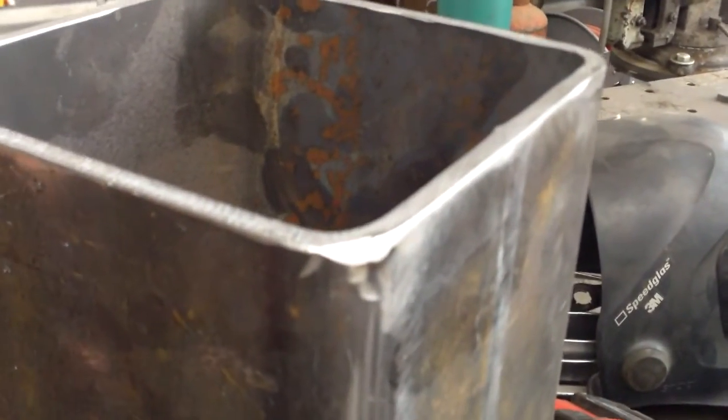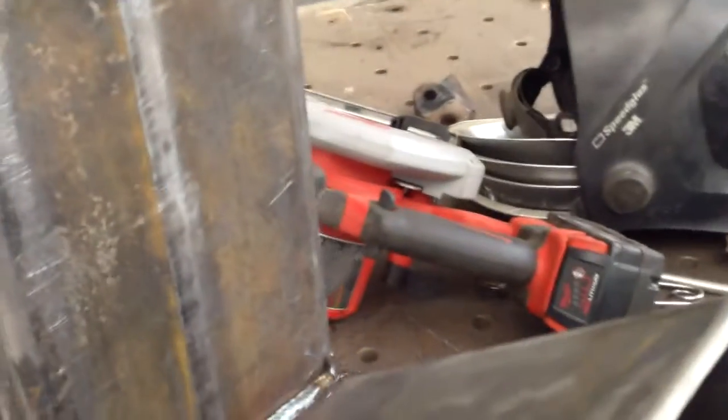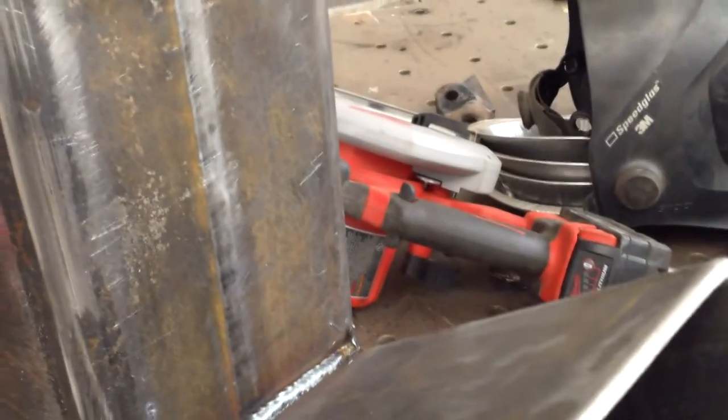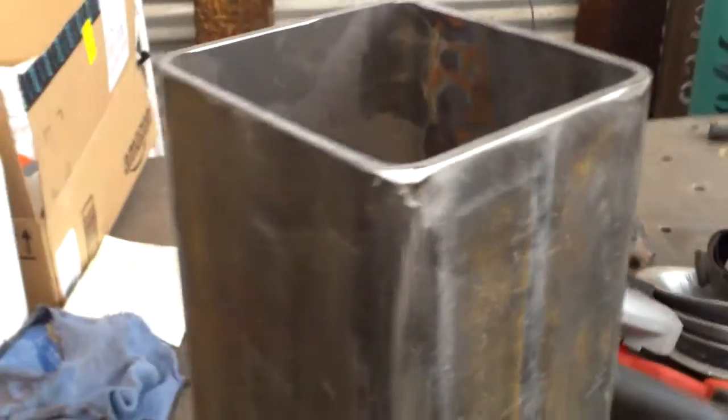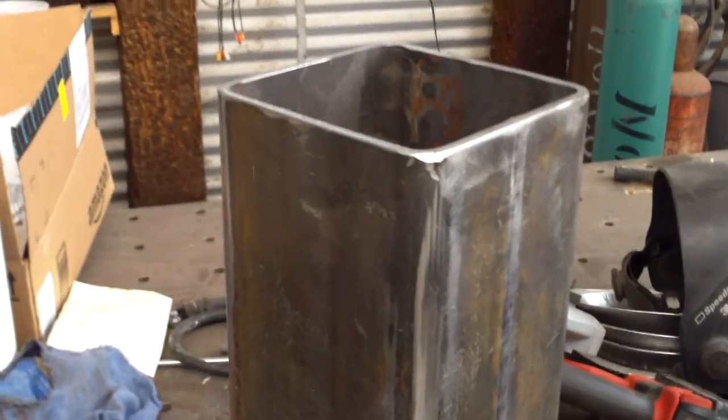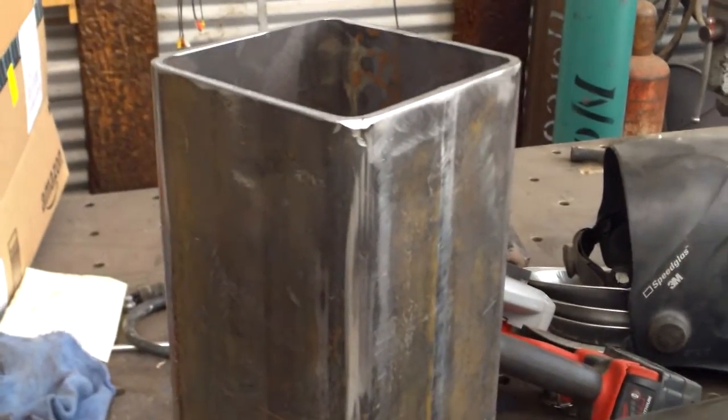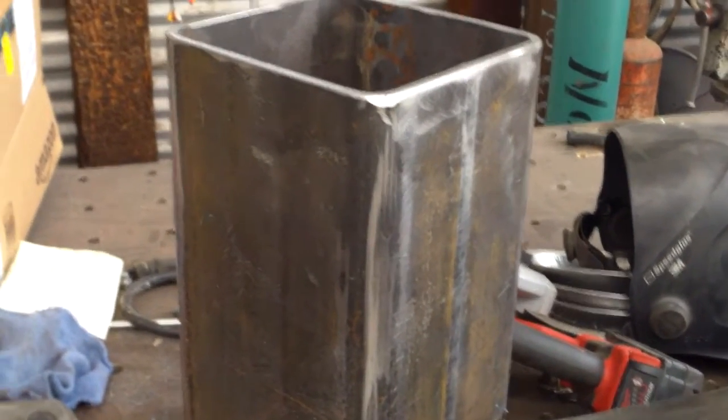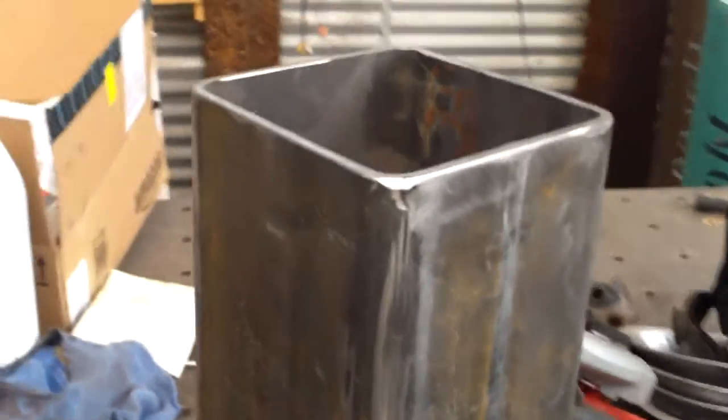I'll probably weld some like a half inch rod all the way around here so this slides over and slides down over that. And if I want to take it off for another attachment, or I've got a big pot and I don't think it'll set on there, it's going to shut the air flow off. So that might make it a lot more versatile. If this is too light, I can cut it out of some three sixteenths or quarter inch.